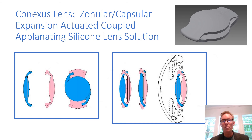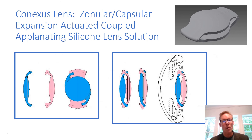The base lens with a buttressed haptic design maintains an open capsule concept, greatly limiting capsular phimosis and opacification. Physiologic equatorial expansion during the eye's natural accommodative effort causes the coupled lens to reversibly appanate, reducing the power of the IOL, restoring or even augmenting the eye's natural ability to change its focal distance.